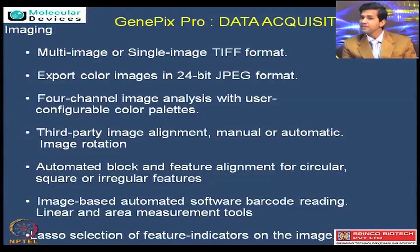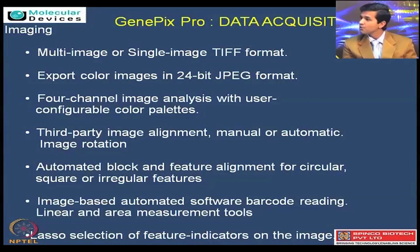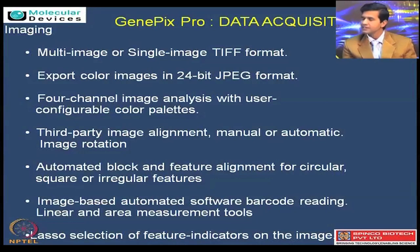Third-party image alignment and manual or automated alignment can be done. Each particular array has different blocks which in turn contain the features. These features are actual genes or proteins or the representative biological material you are checking. This has to be aligned with the annotation information. This can be done by a third party, or GenePix Pro does it by itself through automation. Automated block and feature alignment is possible. Even different sizes and shapes of spots can be handled — from circular, square to irregular features — at the level of image alignment.